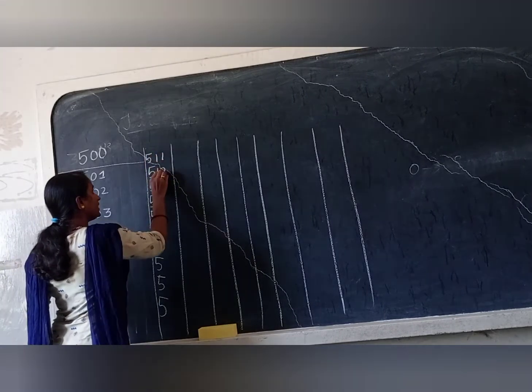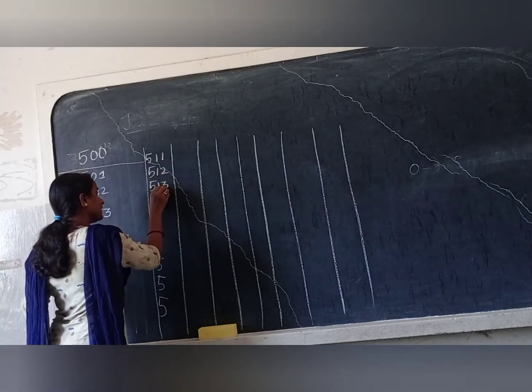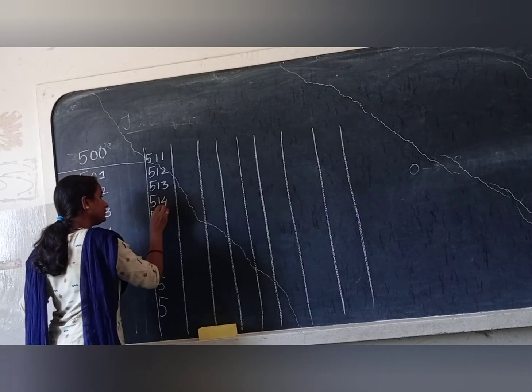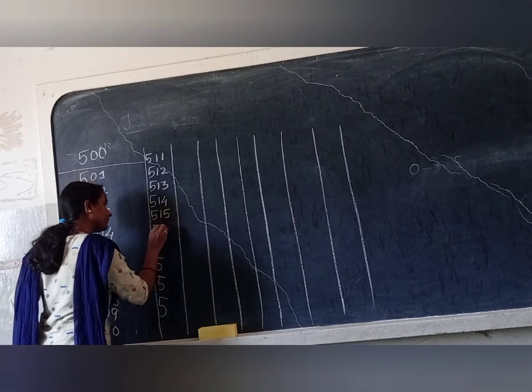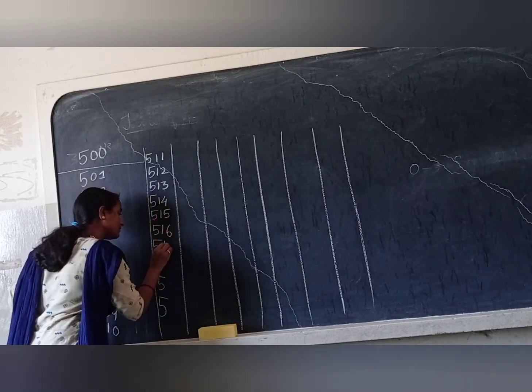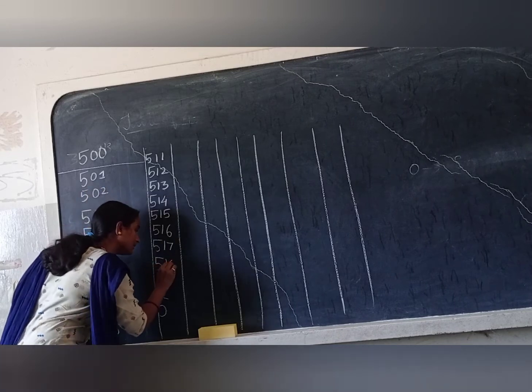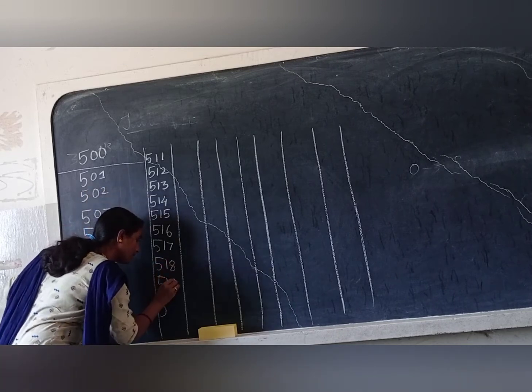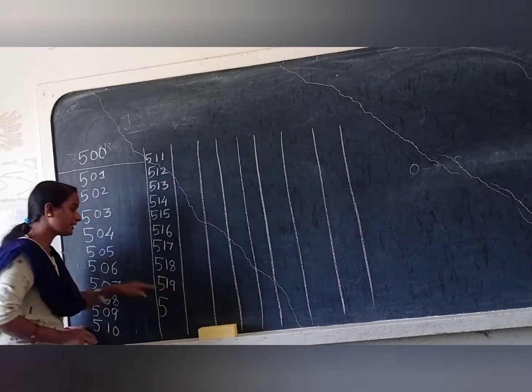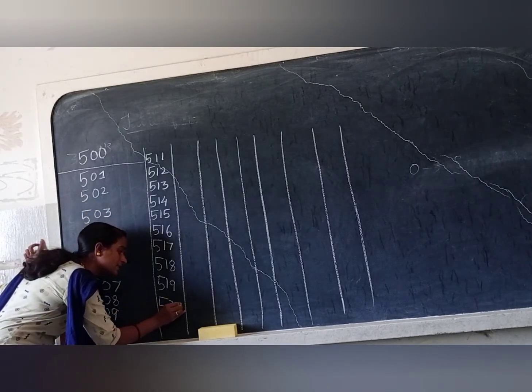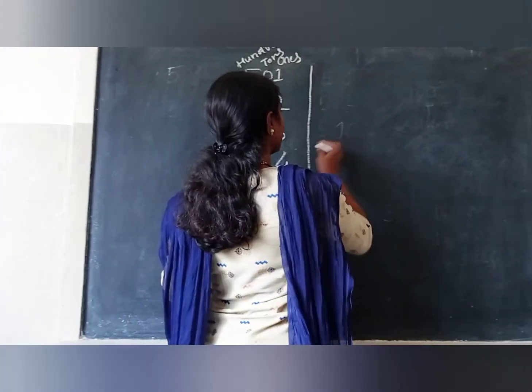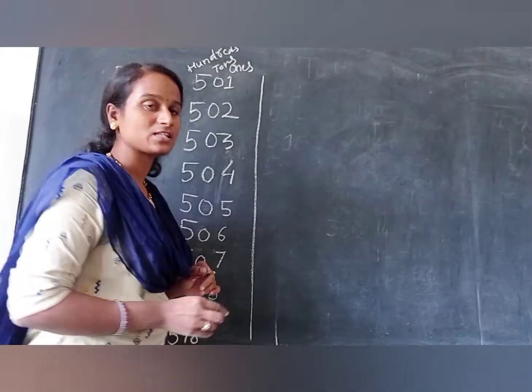Children, 512, 513, 514, 515, 516, 517, 518, 519. And after 519 comes 520. Now, for example, let us see some random examples children.